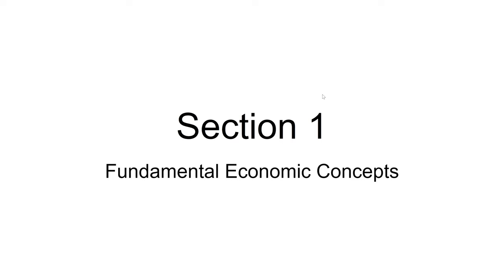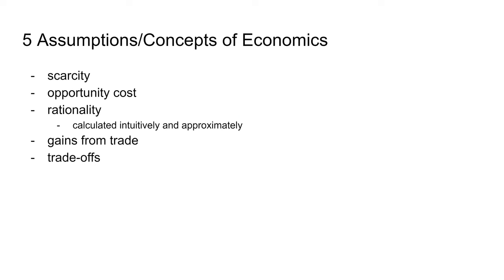Section 1: Fundamental Economic Concepts. The five assumptions and concepts that underlie most economic models and formulas are scarcity, opportunity costs, rationality, gains from trade, and trade-offs. Scarcity is the idea that all resources are limited and our desires are unlimited. Because of scarcity, we have to make efficient choices on how we're going to allocate our scarce resources to satisfy most of our unlimited desires.